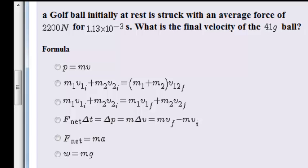A golf ball initially at rest is struck with an average force of 2,200 N for 1.13 times 10 to the power of negative 3 seconds. What is the final velocity of the 41 gram ball?